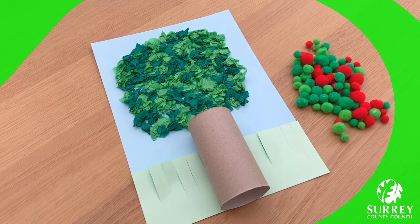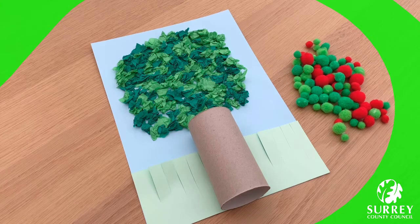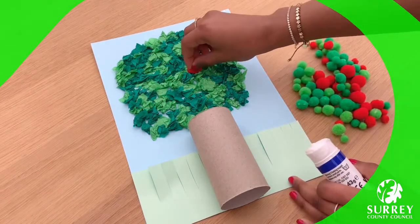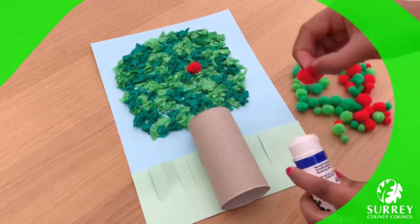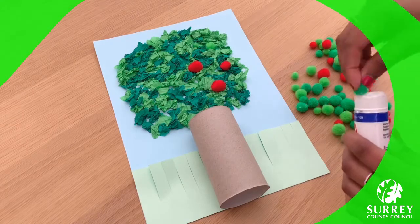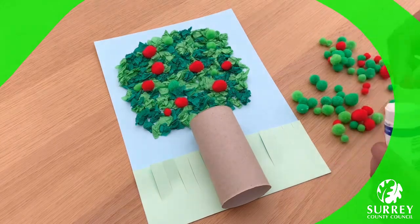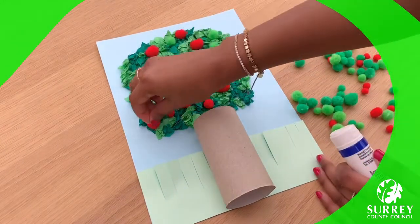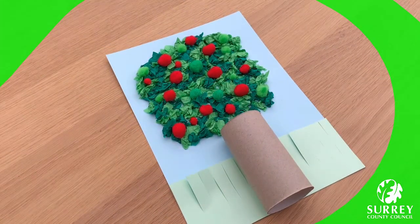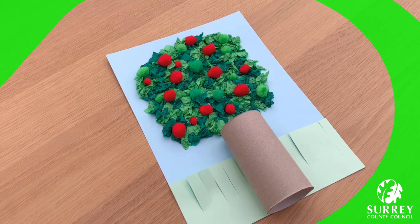Okay, so last of all we need to add the lovely apples to the tree using our colorful pom-poms and our glue stick or PVA glue. Here we go! Wow! What a super simple activity! I'm sure you all have done a fantastic job! Make sure you send me photos of your apple trees so that I can see!